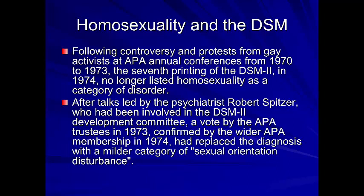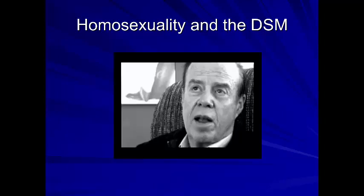One issue that's been very controversial is homosexuality. Homosexuality used to be a diagnostic category in the DSM. Robert Spitzer, involved in the DSM-2, organized a vote to eliminate homosexuality as a diagnostic category, but changed it to 'sexual orientation disturbance' — so that somebody who was gay or straight and was unhappy about it could be considered to have a sexual orientation disturbance, but simply being homosexual would not be labeled as a psychological diagnosis.